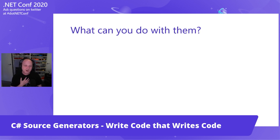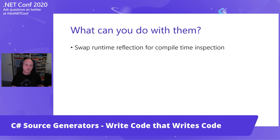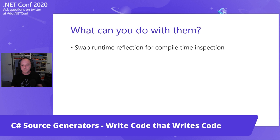What can you do with source generators? In my opinion, there are three basic buckets. The first is performance: a lot of work happens at runtime via reflection — at app startup, you might discover stuff for a DI container or for ASP.NET routing to discover your controllers. If that work can be moved to compile time, you're saving your users all of that time and putting it on your build server instead of your users' machines, which is a huge potential benefit.